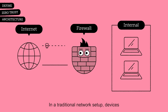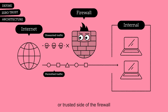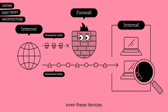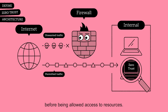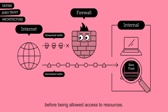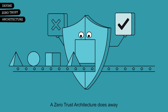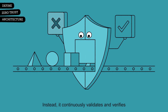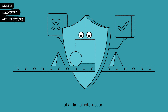In a traditional network setup, devices and users on the internal or trusted side of the firewall are assumed to be safe. However, with a Zero Trust approach, even these devices and users must be verified before being allowed access to resources. A Zero Trust Architecture does away with any implicit trust. Instead, it continuously validates and verifies trust at every stage of a digital interaction.